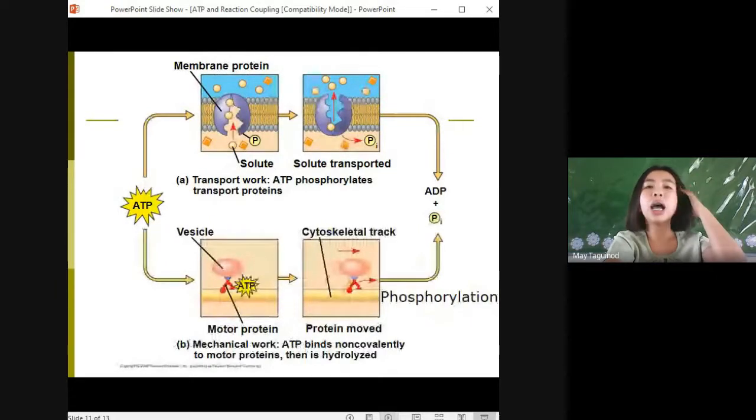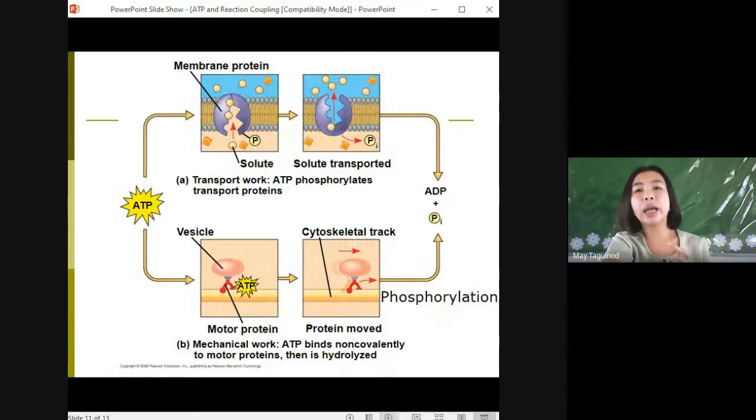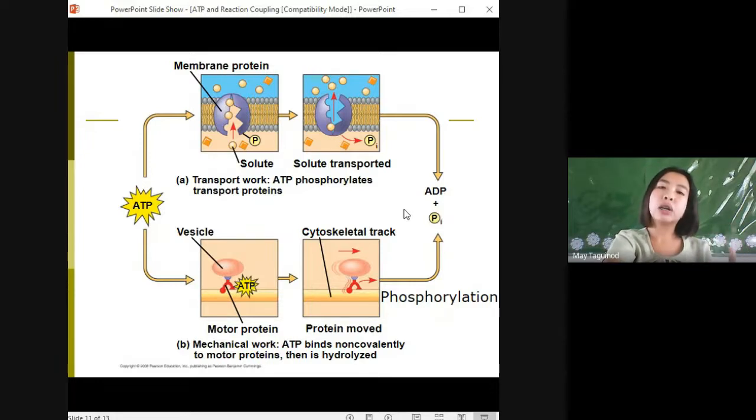So how ATP drives transport and mechanical work. We have three types of cellular work: mechanical, transport, and chemical. Each is powered by the hydrolysis of ATP. In the cells, the energy from exergonic reaction of ATP hydrolysis can be used to drive an endergonic reaction.